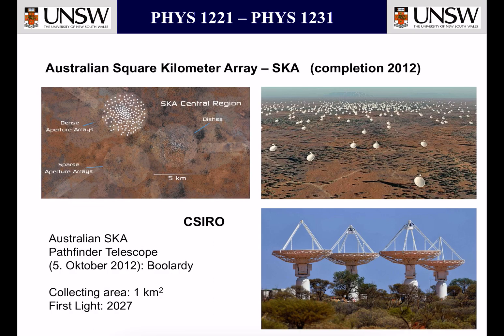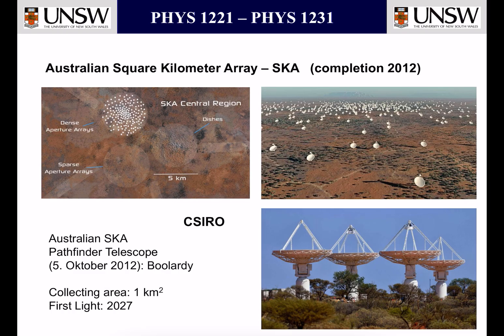These telescopes are actually radio frequency telescopes and not optical telescopes. And in the final stage, the project will be joined with South Africa, where they built a similar array of parabolic antennas. In the end, we will reach a separation distance of 3000 kilometres. So this will be a huge achievement to improve the resolution of these radio telescopes.